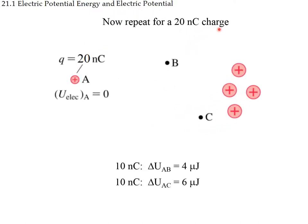Now we repeat this for a 20 nanocoulomb charge. We have to do more work because we're moving more charge. Since we're pushing a positive charge closer to other positive charges, the charge would not do that by itself due to the repulsive force. For 10 nanocoulombs we spent 4 microjoules to reach B and 6 to reach C; for 20 nanocoulombs those values double to 8 and 12 microjoules.